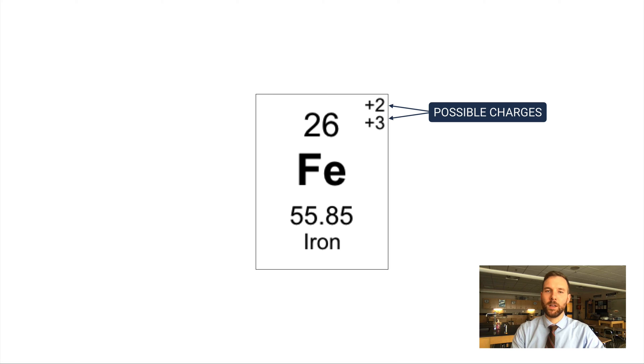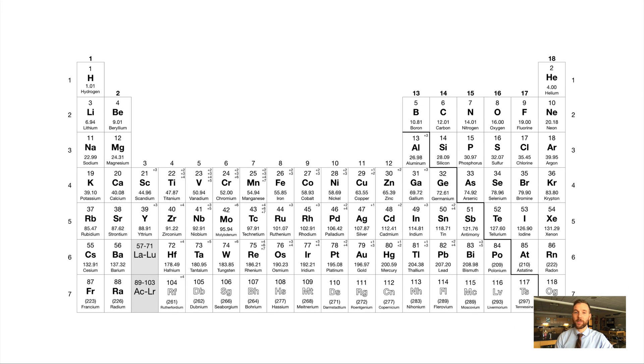The reason why they do this is because sometimes it's easier to lose two electrons, sometimes it's more convenient to lose three. That's the basic explanation. This means as we name compounds that contain iron, we have to tell what iron we're talking about—are we talking about iron plus two or iron plus three?